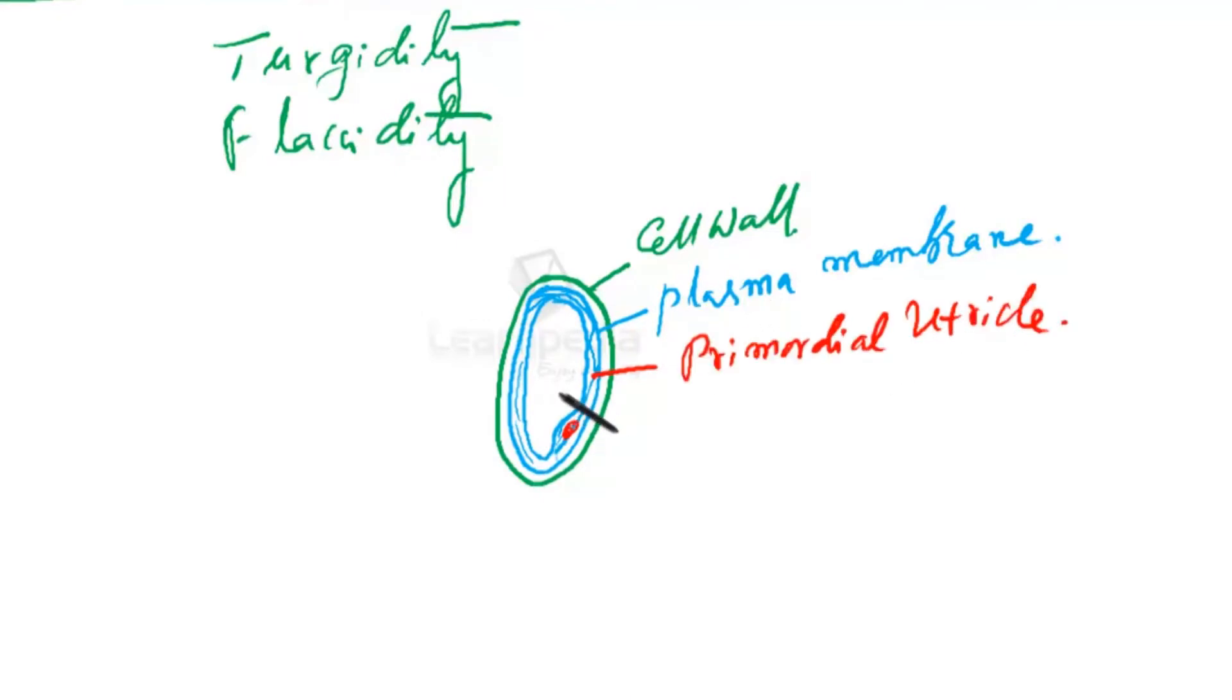To understand the mechanism of stomatal movement, you should go back to certain phenomena: turgidity and flaccidity. When a cell is a living cell, and this is cell wall, and inside there is plasma membrane, and the protoplasm is as a thin layer. Here is the nucleus. Now this thin layer of protoplasm is called primordial utricle. The center of the cell is occupied by a large vacuole, and this vacuole is filled with cell sap.